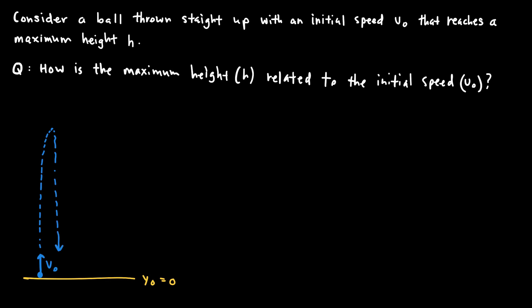Since the question is about the relationship between initial speed v_naught and maximum height h, I don't need to consider any motion after the object reaches its maximum height. The initial position is where the object is thrown up, and the final position is the very top of the path where it reaches maximum height h. Everything after that I'm not interested in.